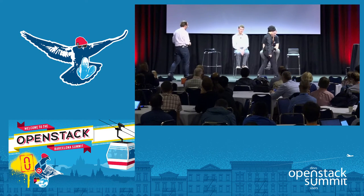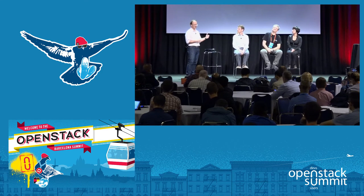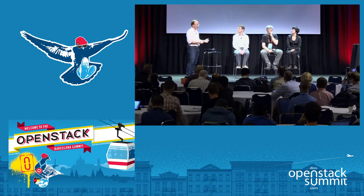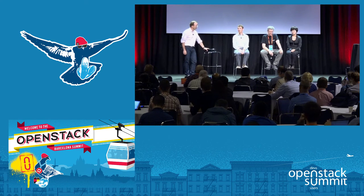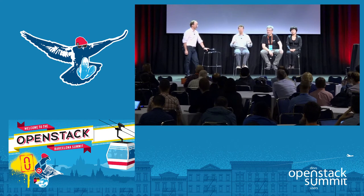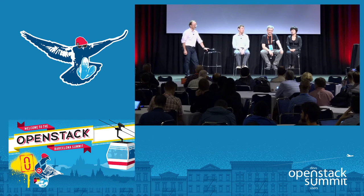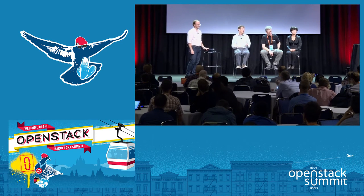My first question to this esteemed group is for each one to introduce themselves and what they work on. Starting with Chris: My name is Chris Wright. I am Vice President and Chief Technologist at Red Hat. I focus on our technology strategy, looking at where the industry is moving and where open source innovation is solving new interesting problems across the industry.